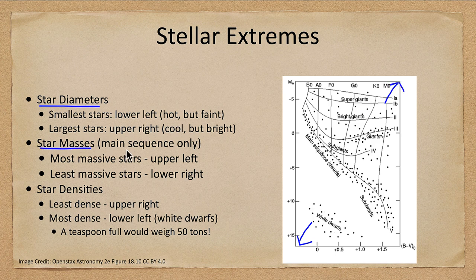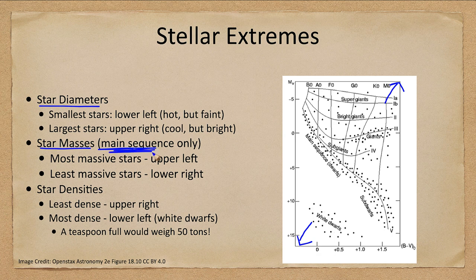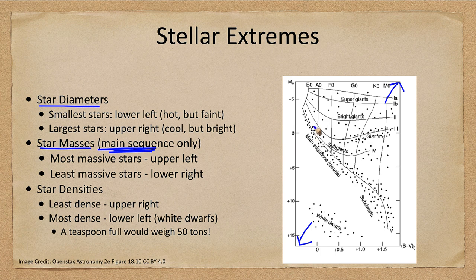Star masses we can tell, but only along the main sequence - this doesn't apply to giants or supergiants. We find the most massive stars on the main sequence to the upper left and the least massive down to the lower right.